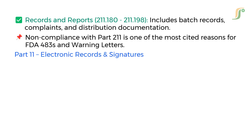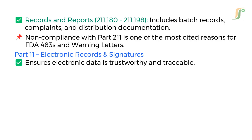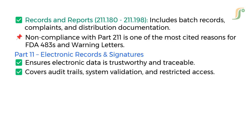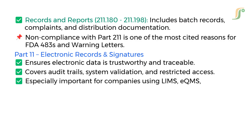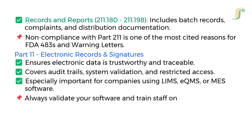Part 11 covers Electronic Records and Signatures. It ensures electronic data is trustworthy and traceable, covering audit trails, system validation, and restricted access. This is especially important for companies using LIMS, EQMS, or MES software. Always validate your software and train staff on electronic documentation protocols.